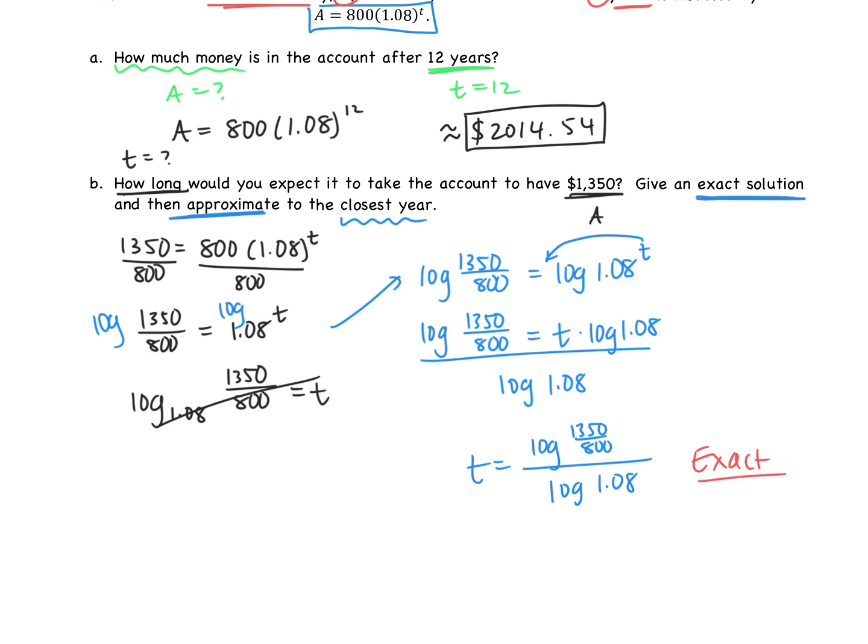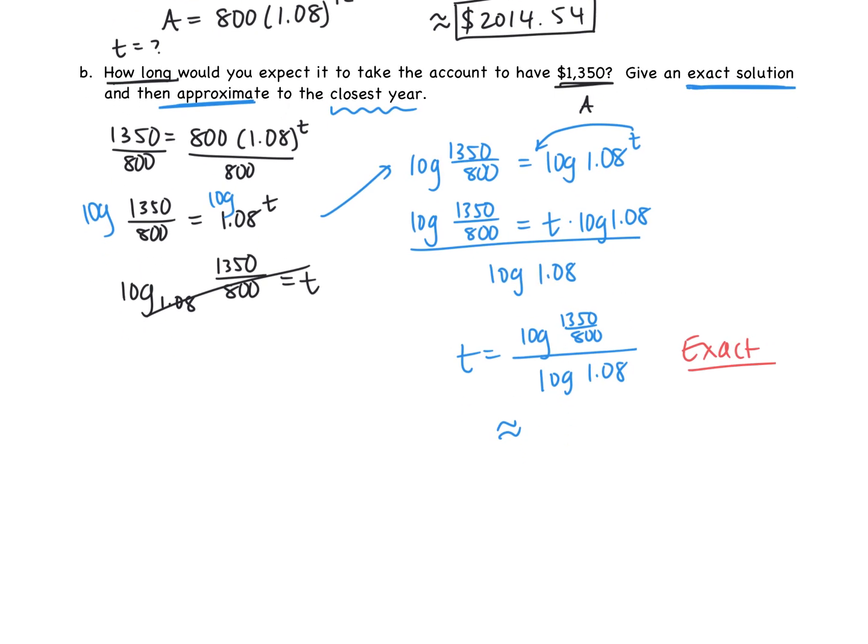The approximate solution is now going to come when we go to the calculator. So type this in exactly how it appears to your calculator, please. This time, though, use the log button. I got about 6.8, which rounded to the nearest year is about seven years. And so seven years would be the approximate solution.